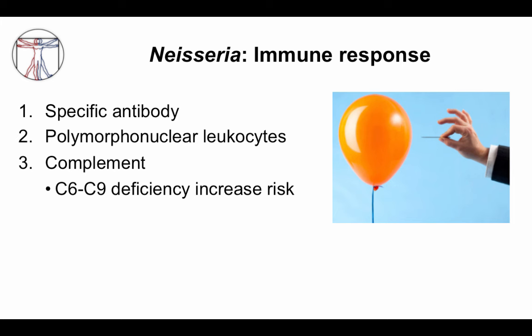Regarding immune response to Neisseria: specific antibodies, when produced, are effective. For Neisseria meningitidis, you want antibodies active against the polysaccharide capsule — there's a vaccine directed to do just that. Polymorphonuclear leukocytes can ingest the organisms when they overcome virulence factors. Complement is also important; people with deficiency in membrane attack complex components C6 through C9 have impaired ability to stop Neisseria infection. Recurrent Neisseria meningitidis infection should raise concern for terminal complement pathway deficiencies.